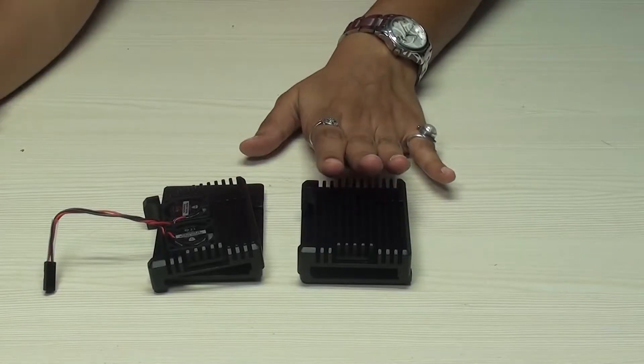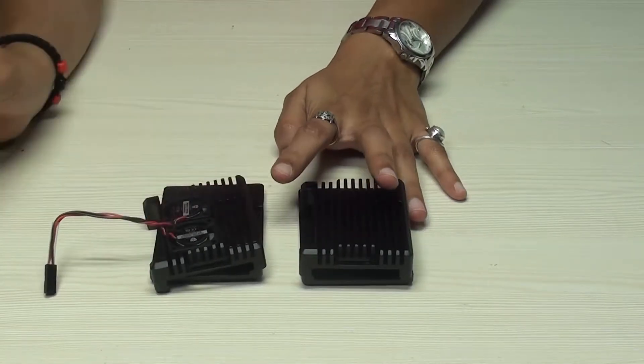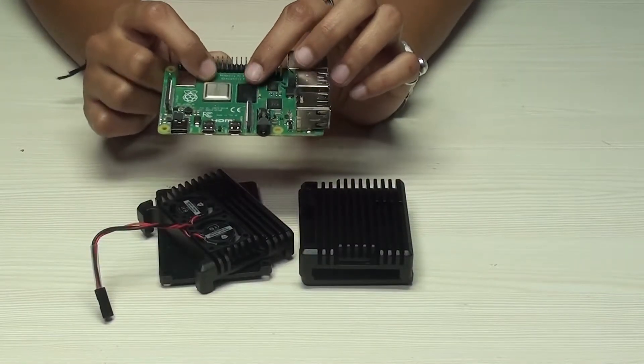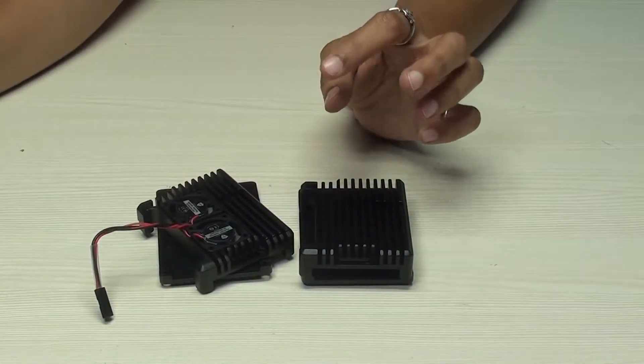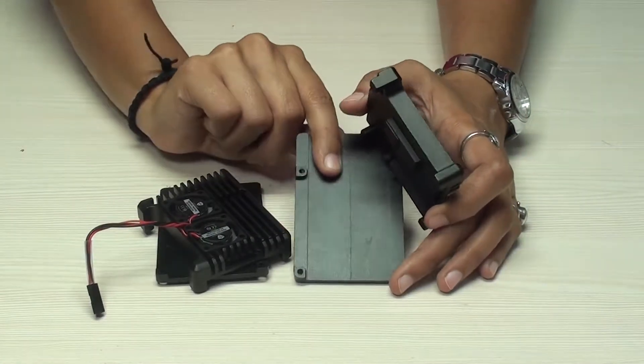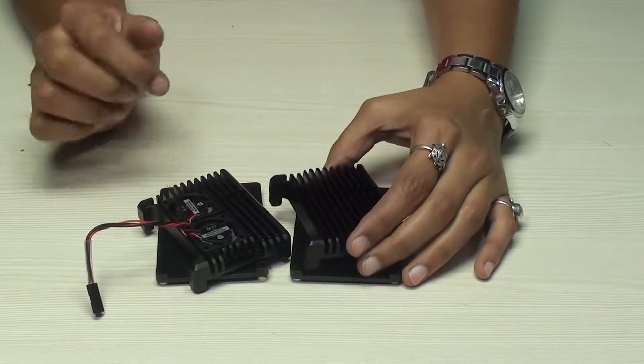These heatsinks are specially designed for Raspberry Pi 4 Model B to help improve the performance of the Raspberry Pi board by dissipating the heat generated by the processor. The unique structure and increased surface area along with high-grade aluminum material help to reduce the operating temperature.